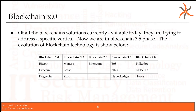Then came blockchain 2.0. Ethereum is an improvement on blockchain 1.0 technologies. Instead of creating a new cryptocurrency by forking an existing blockchain, Ethereum introduced a platform that allows creation of cryptocurrencies programmatically. To do this, they introduced the concept of smart contracts — code you could write to implement your cryptocurrency without worrying about nodes, mining, and all that complicated stuff.